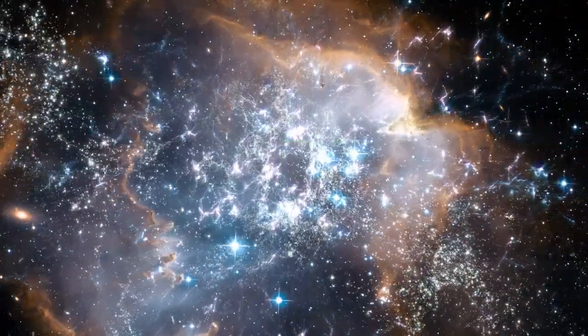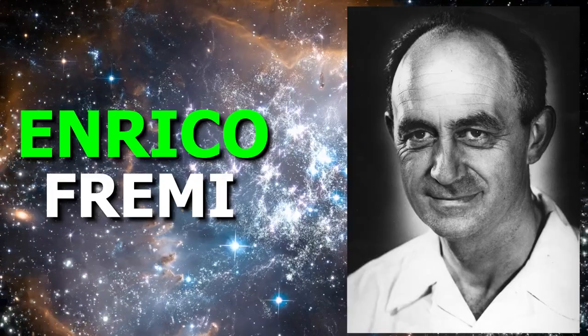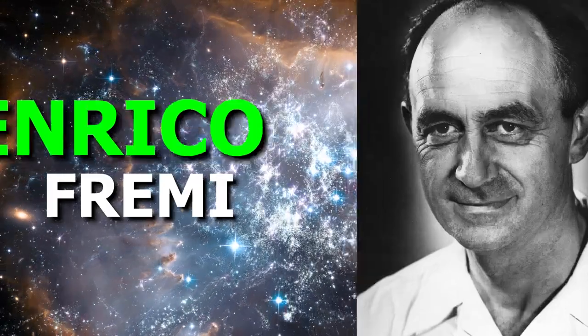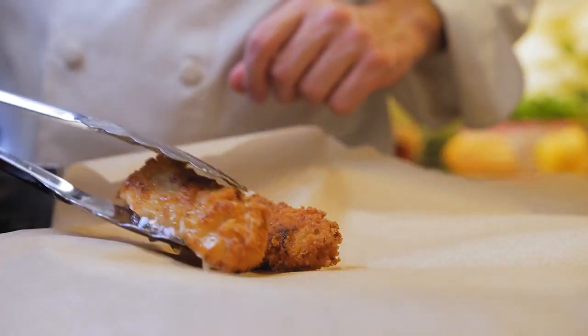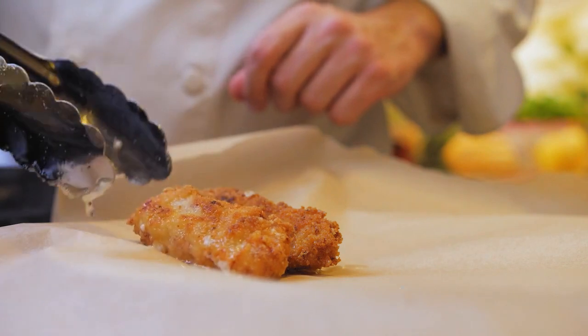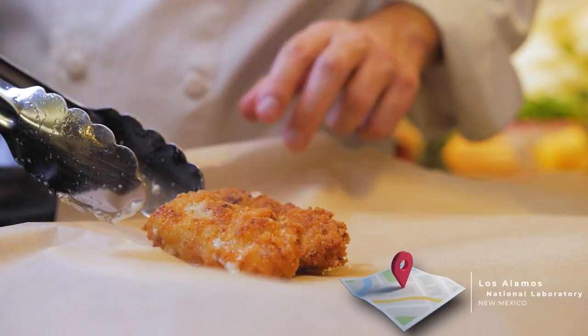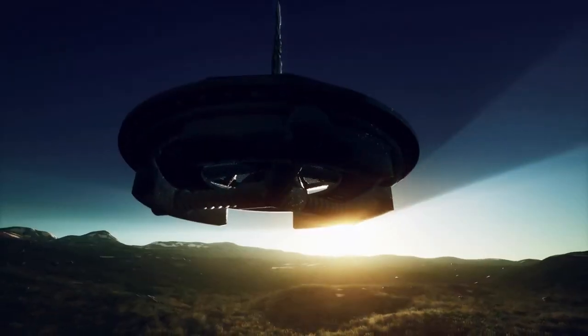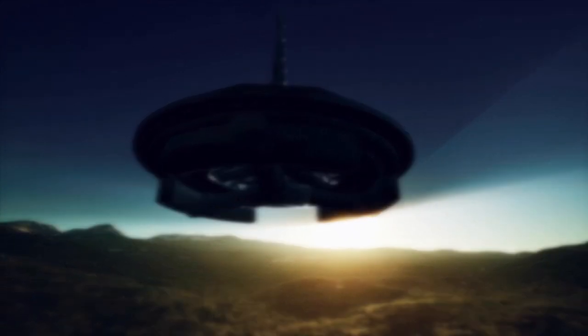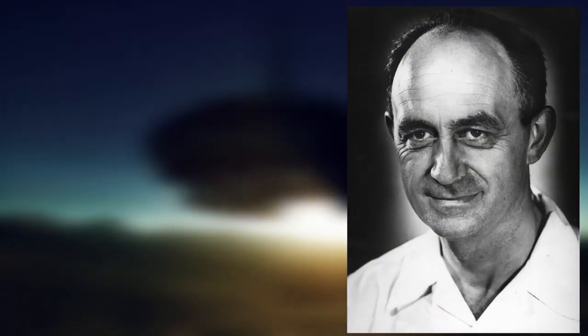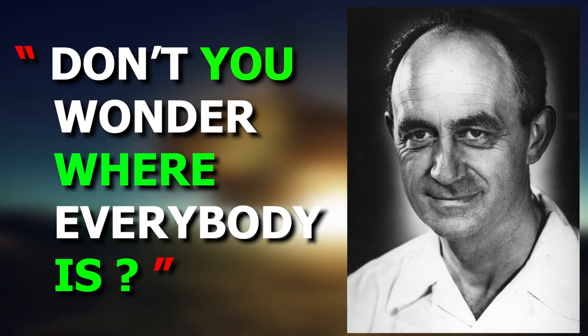The story of Fermi's Paradox begins with Enrico Fermi, one of the greatest physicists of the 20th century. In the summer of 1950, Fermi was having lunch with some friends at the Los Alamos National Laboratory in New Mexico. The conversation turned to recent reports of UFO sightings and alien encounters, and Fermi suddenly blurted out, 'Don't you wonder where everybody is?'